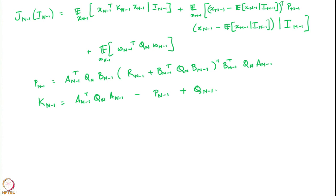Notice that this expression is eerily similar to what we have seen before, but there is now an additional term that has crept in. This additional term arises because of imperfect state information — it would vanish if i_(n-1) contained information about the state, because then the conditional expectation would simply be x_(n-1) and the error term would vanish. This is effectively the cost we are paying due to the lack of perfect state information.